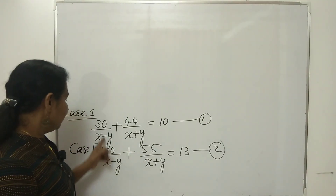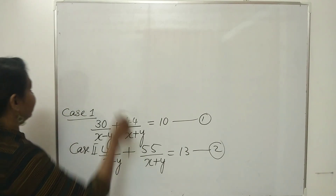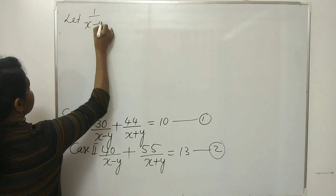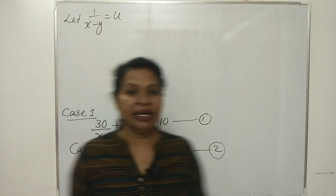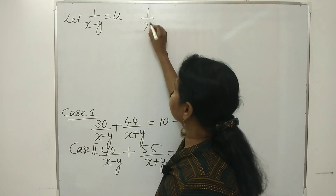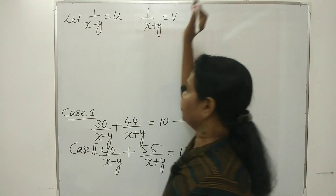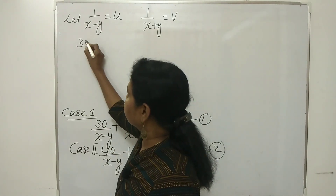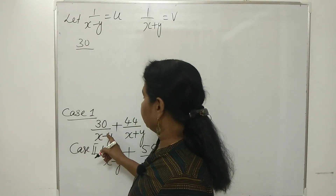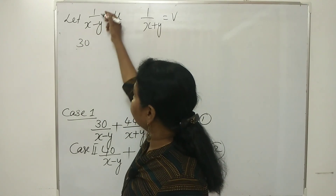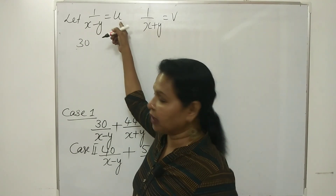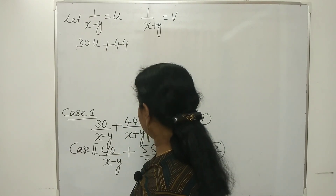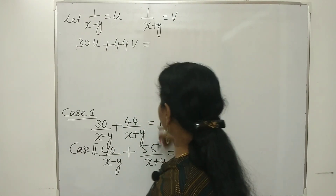Now we have to solve this. Let 1 divided by (x minus y) equal to u, and 1 divided by (x plus y) equal to v. Substituting into equation 1, it becomes 30u plus 44v equals 10. This is equation number 3.